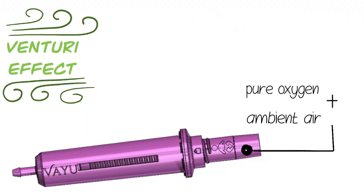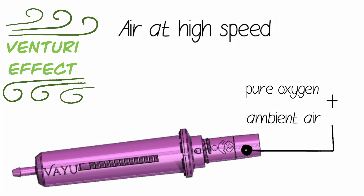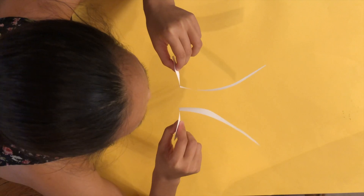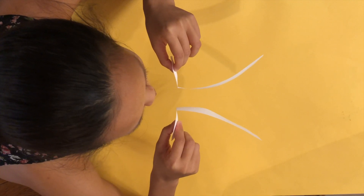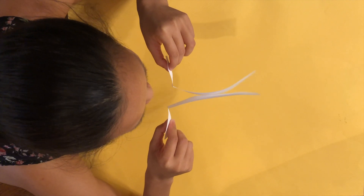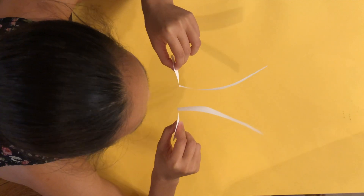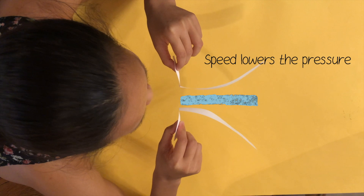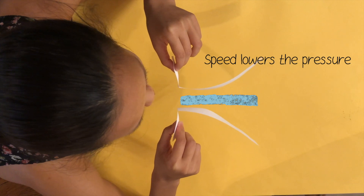The Venturi effect is when a jet of air flows at a high speed and the pressure within the air jet decreases. One example to demonstrate how this works is blowing air between two sheets of paper. As you push out air, the speed of the air jet lowers its pressure.